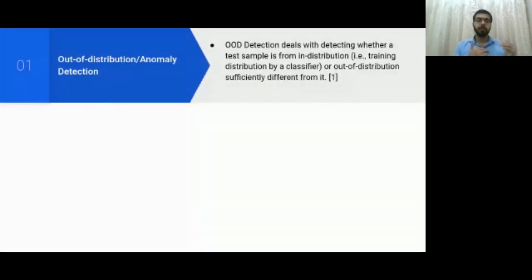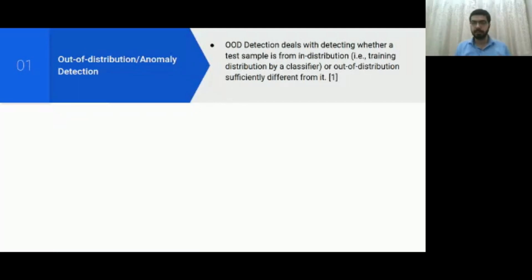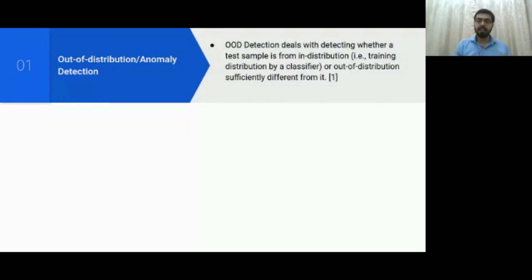Out-of-distribution and anomaly detection are both used interchangeably in the literature. OOD detection deals with detecting whether a test sample is from the in-distribution — that is, the training distribution — or out-of-distribution, sufficiently different from it. Anomaly detection is like the umbrella term; everybody uses these terms to represent the entire field. It's about detecting whether a test sample is from in-distribution or out-of-distribution.